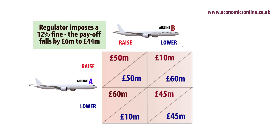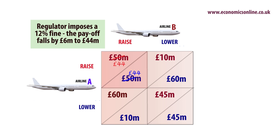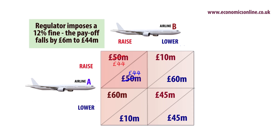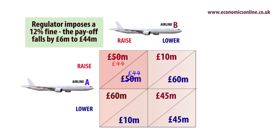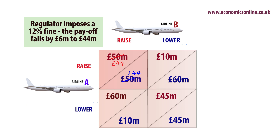This is where a regulator can enter the market and impose a fine on firms caught colluding. A 12% fine would be sufficient to provide a disincentive to collusion. Taking into account the fine, the net gain from colluding at £44 million would be less than from openly competing on price. Hence regulators can exploit game theory to alter firm behavior and deter anti-competitive practices.